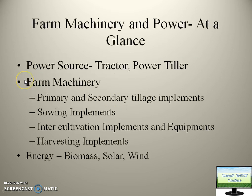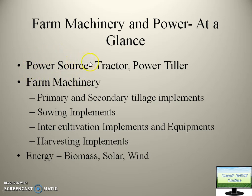This is Farm Machinery and Power at a glance. The first section consists of power sources. To operate any machinery there is a need of power, so what are the power sources available in the agriculture field? The primary ones are tractor and power tiller — these are the sources of energy with which any implement will be operated.